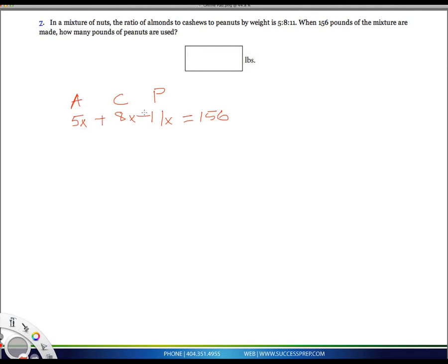to the total quantity of 156. When you add up 5X, 8X, and 11X, you get 24X equals 156. Divide by 24.